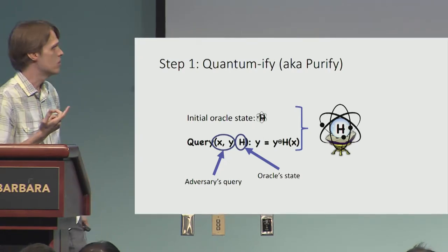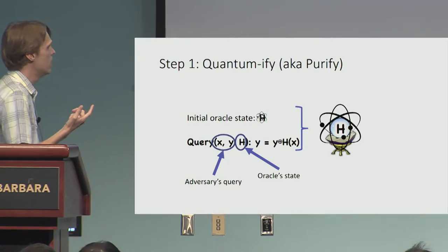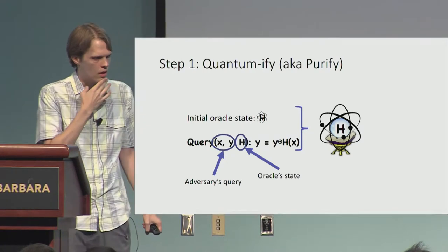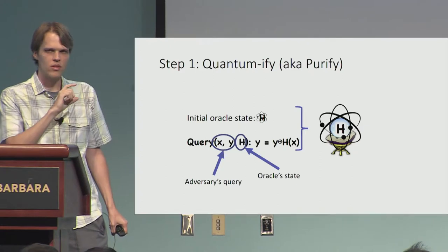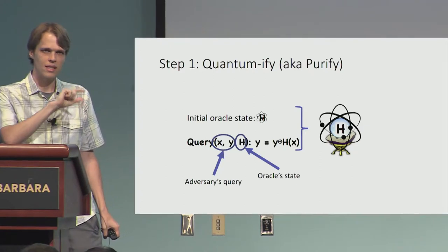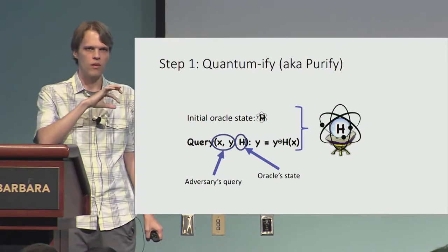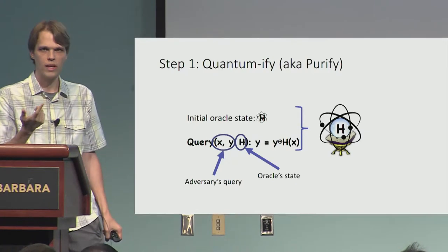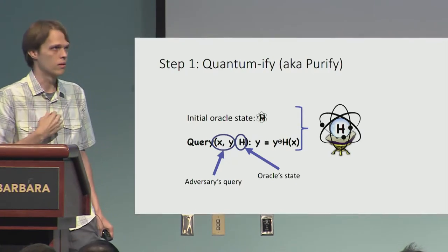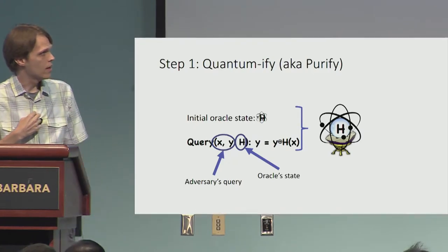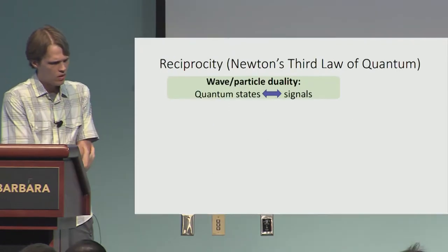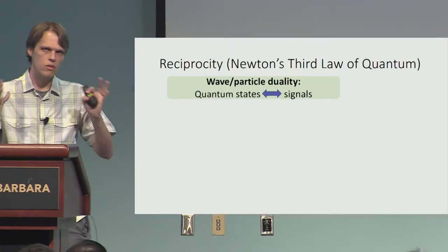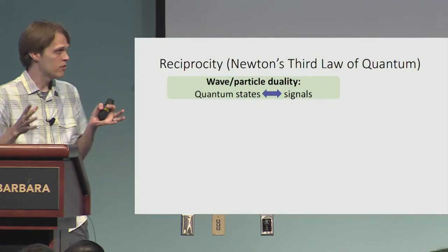One little thing to get out of the way: quantum computation is reversible, so we have to model our quantum queries as reversible computation. The adversary's query actually contains an input and an output, and the result of the query basically just XORs the query output into the value supplied by the adversary.